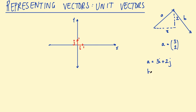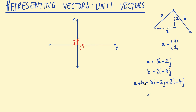Let's say we had another vector b equal to 2i minus 4j. We can add these two vectors together using this notation. So a plus b equals 3i plus 2j plus 2i minus 4j. Then add the i components and j components: 3i plus 2i is 5i, and 2j minus 4j is negative 2j. So the resultant is 5i minus 2j, which we could label vector c.